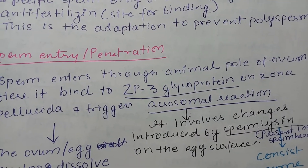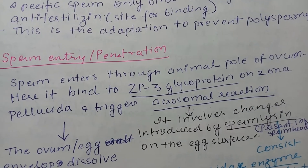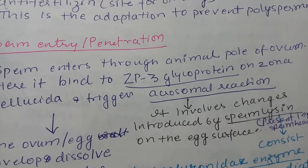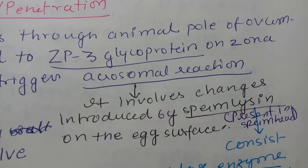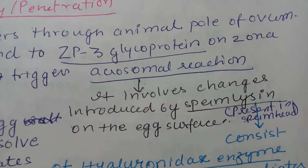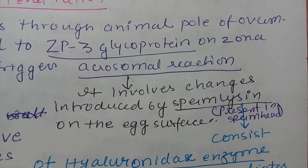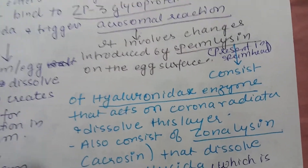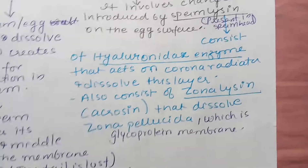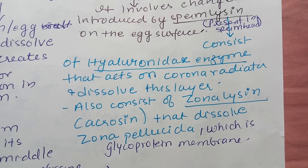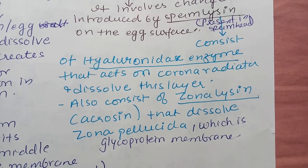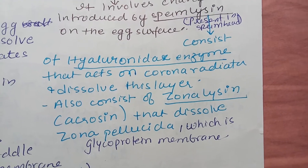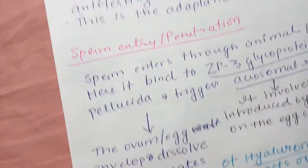The sperm enters through the animal pole of the ovum. Here it binds to the ZP3 glycoprotein on the zona pellucida. The zona pellucida is the non-cellular membrane made up of glycoprotein. This binding triggers the acrosomal reaction, which involves changes introduced by sperm lysins on the egg surface. The main enzymes are hyaluronidase, which acts on the corona radiata and dissolves that layer, and zona lysin or acrosin, which dissolves the zona pellucida.